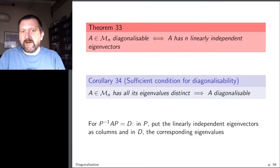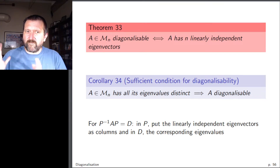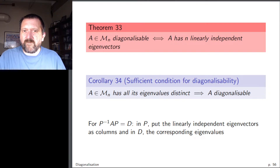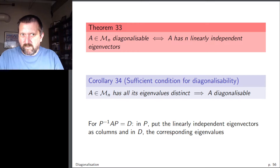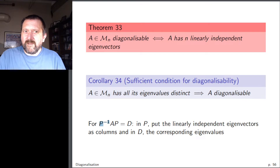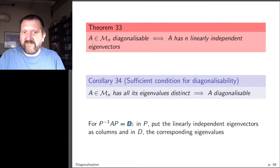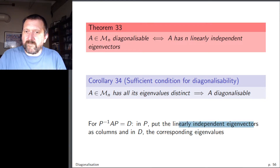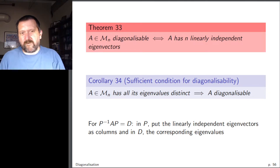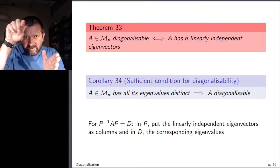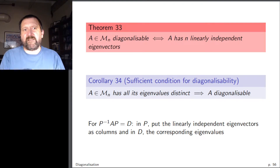To diagonalize a matrix, put the n linearly independent eigenvectors as columns of P, then compute P^{−1}AP to obtain D. The diagonal entries of D are the corresponding eigenvalues in the same order as the eigenvectors in P. For example, if the first eigenvector is placed as the leftmost column of P, the corresponding eigenvalue appears at the top-left of D.